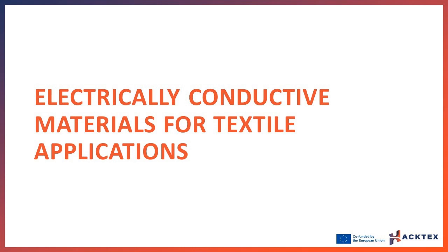There are two main approaches to reach electrical conductivity in textiles. The first is using conductive fibers in fabric production or embroidery. The second is using conductive coatings, pastes, and inks, in order to obtain a thin conductive layer on the surface of fabrics.